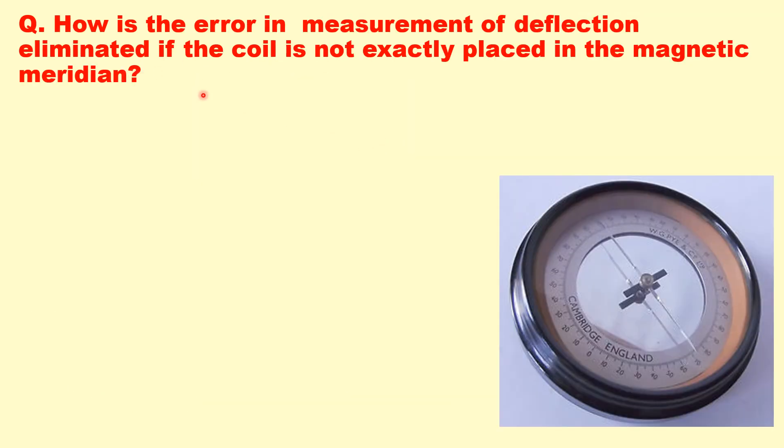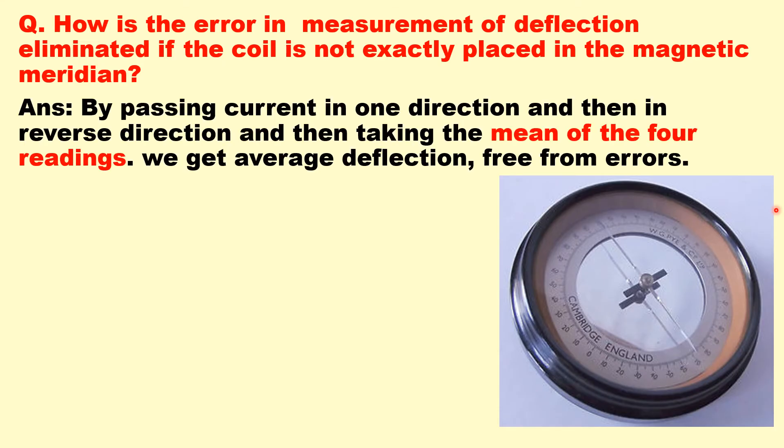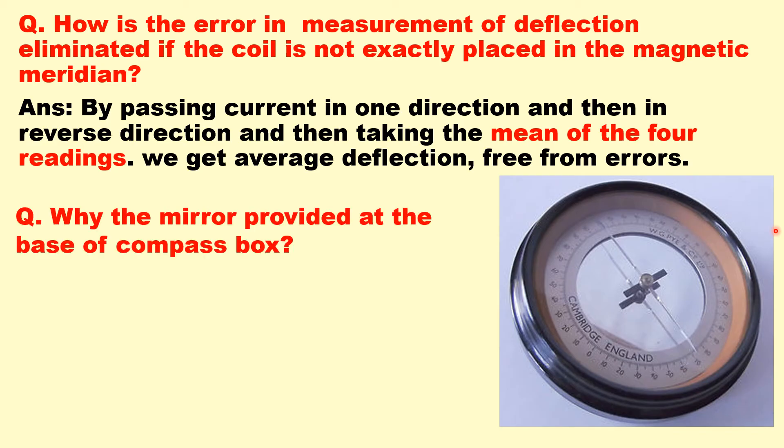Next question is how is the error in measurement of deflection eliminated if the coil is not exactly placed in the magnetic meridian? By passing current in one direction and then in reverse direction using the commutator. If we take the mean of all the four readings then we will get the average deflection which is free from the errors. In that case we have removed the errors which were made during setting the magnetic meridian.